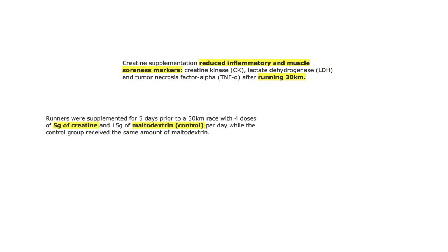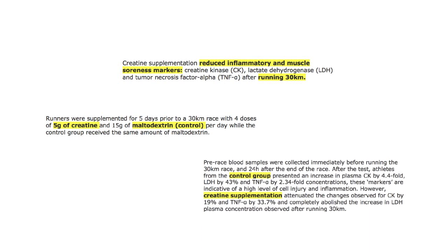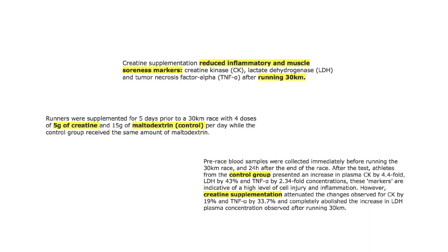Runners were supplemented for five days prior to the 30km race with four doses of 5g of creatine and 15g of maltodextrin (control) per day, while the control group received the same amount of maltodextrin. Pre-race blood samples were collected immediately before running the 30km race and 24 hours after the end of the race.